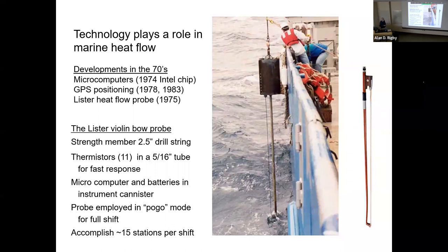Three things happened in the mid-70s. The first Intel chip was 1974, so we now had microcomputers that could store huge amounts of data. GPS positioning came into play in the late 70s and for public consumption in the early 80s, so you knew where the ship was within meters. Then Clive Lister invented the heat flow probe, which we call his violin probe. Clive was a cellist. He knew if you have a violin bow, you have the sensitive element, the string, but you have a strength element, the stick.